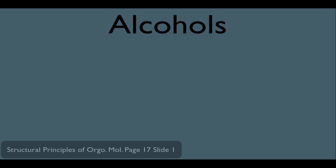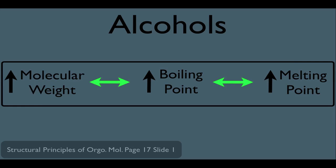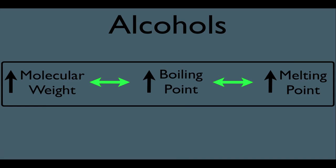To help us better understand intermolecular forces and how they affect physical properties of organic molecules, let's direct our attention to alcohols. The first basic principle is that the higher the molecular weight of an alcohol, the higher its boiling point and also the higher its melting point. However, alcohols have some of the highest boiling points out of most organic molecules, and we need to understand why.